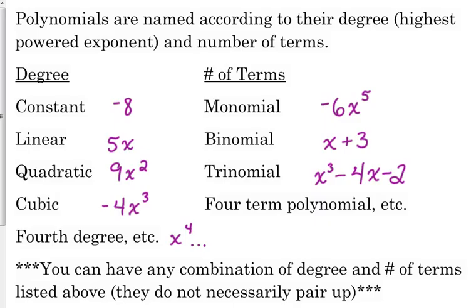We name polynomials based on two things: their degree and their number of terms. We've got constant, which means there's no variable. Linear means you have just an x. Quadratic means you have x squared. Cubic means x to the third. Fourth degree means x to the fourth, and so forth. Sometimes fourth degree is called quartic, but usually at this point they start calling it fourth degree, fifth degree, and so on.